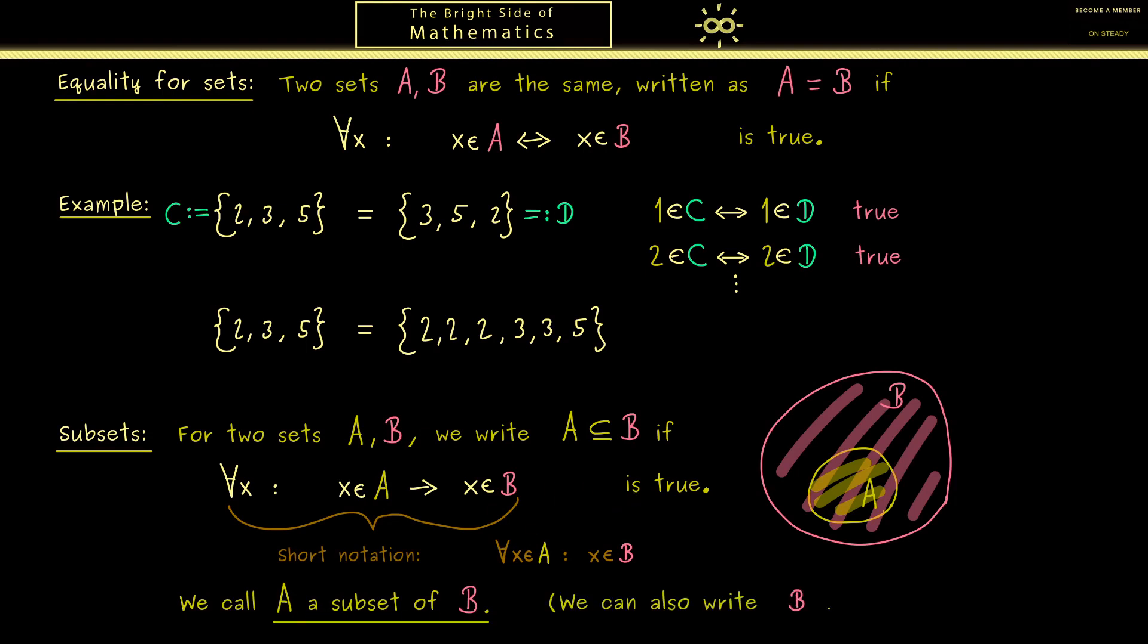To close this video, I can also tell you that we can use the symbol in a mirrored way as we do it for inequality signs. It totally has the same meaning—A is a subset of B—but sometimes it can be helpful to write a subset on the right-hand side. I think that's enough new notations and definitions for today. Let's use the next video to consider more examples and also more set operations. With this, thanks for listening and see you next time. Bye!